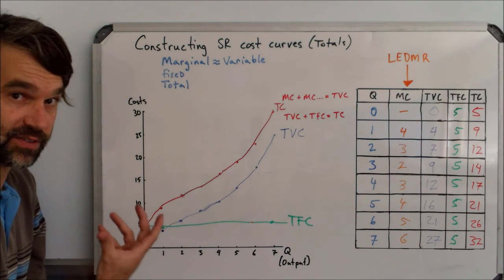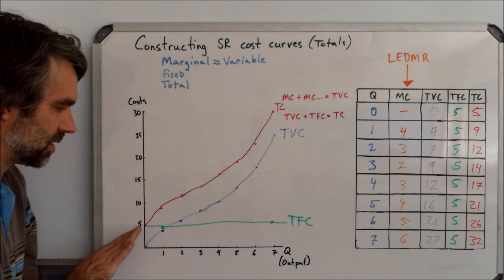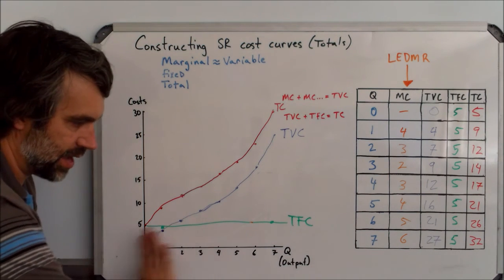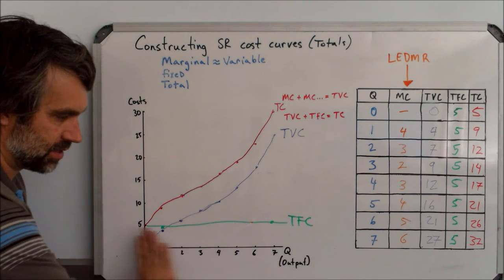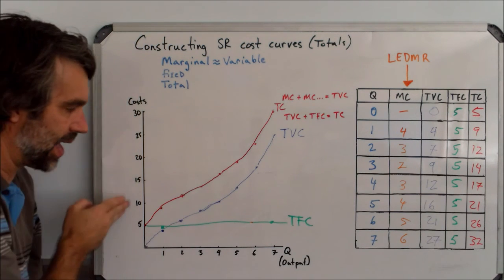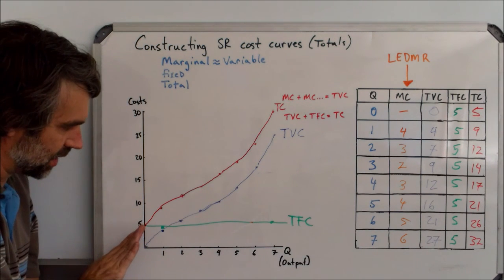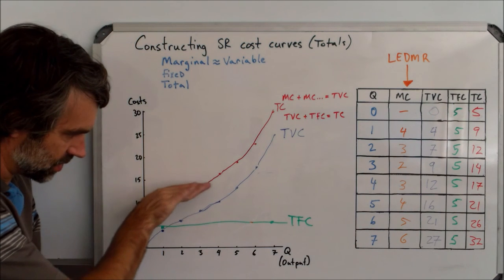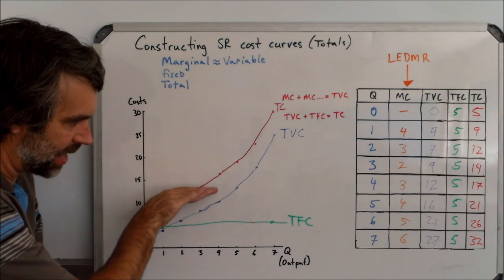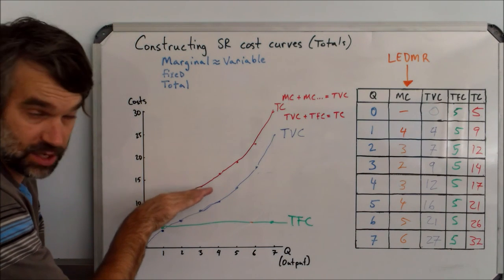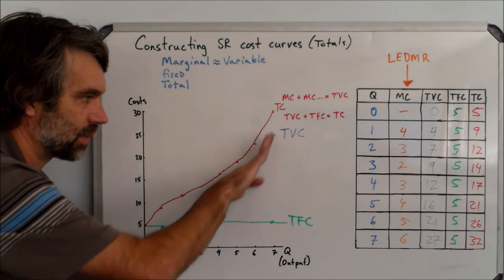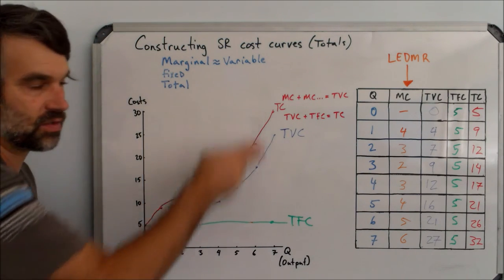You can see the law of eventually diminishing marginal returns in that the good thing, which is the output, is the x-axis. And the bad thing, which is cost, is the y-axis. So we see improving returns as this is more and more flat, and then the diminishing marginal returns are occurring as it becomes more and more steep in each of those curves.